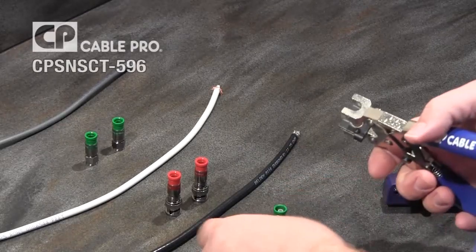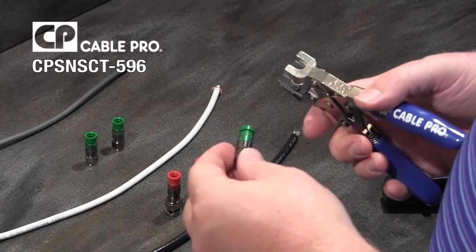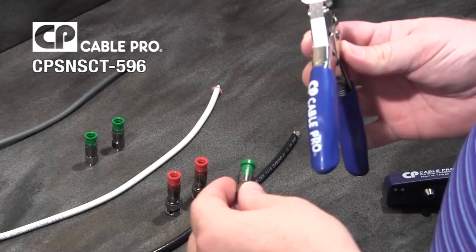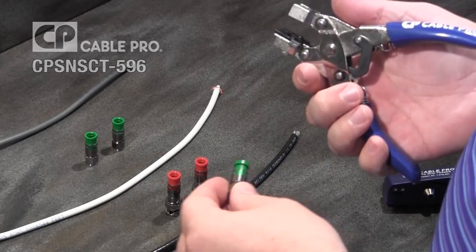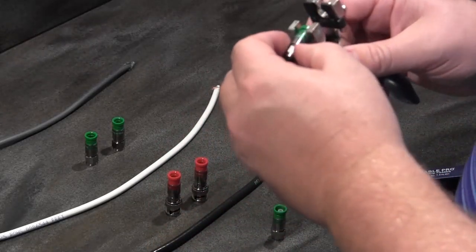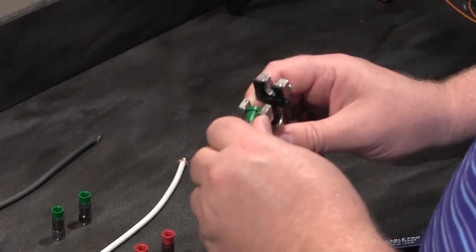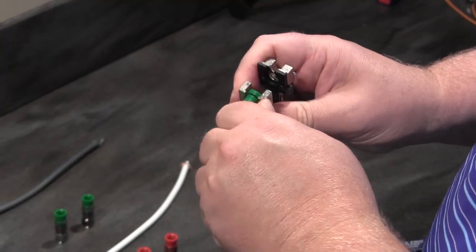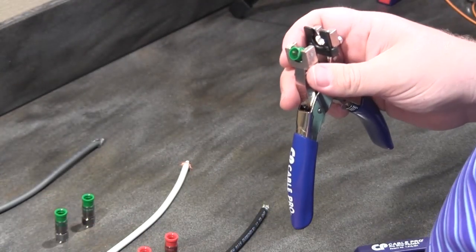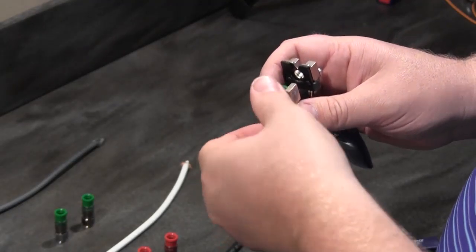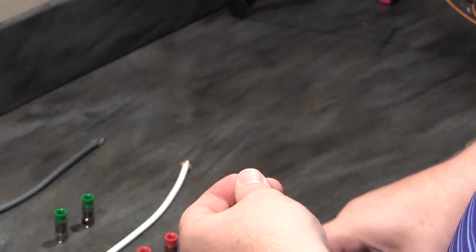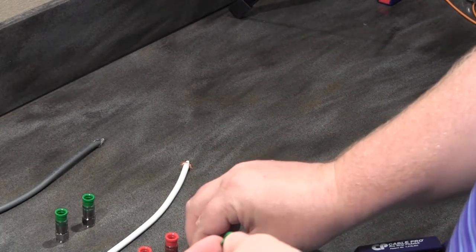First I'll start by showing you the universal F-connector and how to properly terminate using one of our CablePro tools. It's important to notice that Snap and Seal Connectors feature a plastic compression sleeve that's removable very easily on all different types of connectors. This is done for a number of reasons. Number one, plastic sleeves are easier to compress inside the tool.